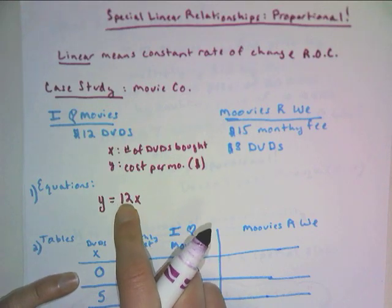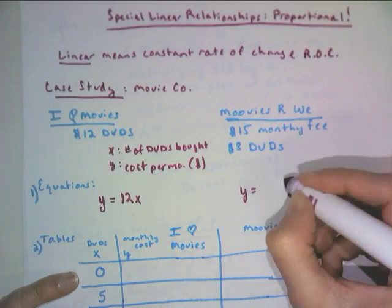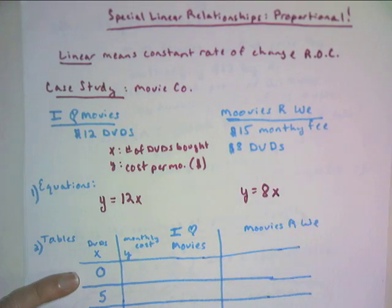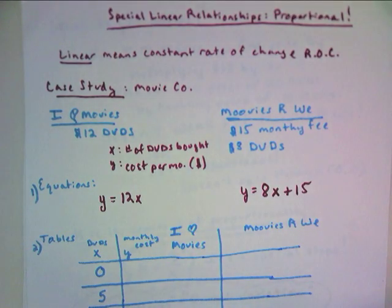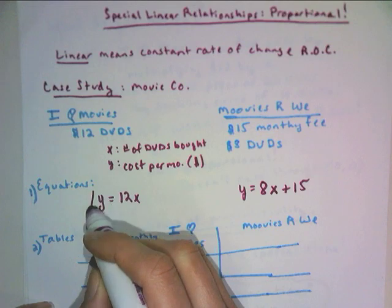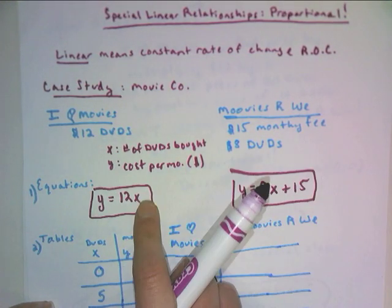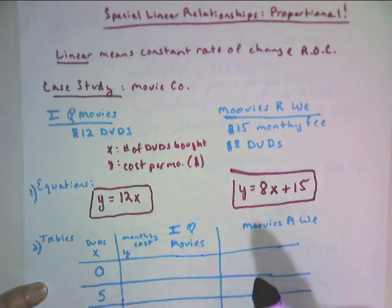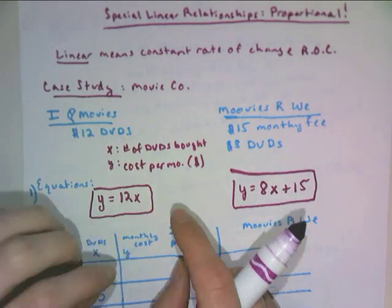So again, that rate of change is the coefficient. Over at Movies Are We, we have $8 per DVD. So $8 per X, starting with a $15 subscription fee. It could be a flat rate. I don't know. But we have two equations, and what you notice about the equations is that this one has no visible constant, but it does have an intercept and is 0. I don't actually say plus 0, but we know that when it's lacking the constant, it passes through the origin.